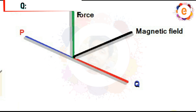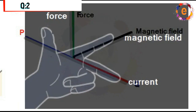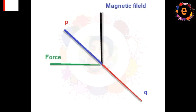Next question: identify the direction of current. The electric field gives the current direction. We use Fleming's left-hand rule — the force direction is P towards Q. The first finger represents the direction of force, and the forward fingers represent the direction of the field. We write the question in this figure to identify the direction of current.